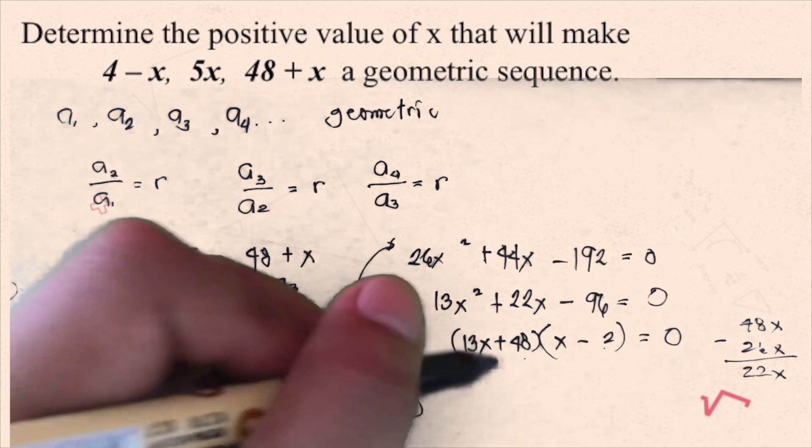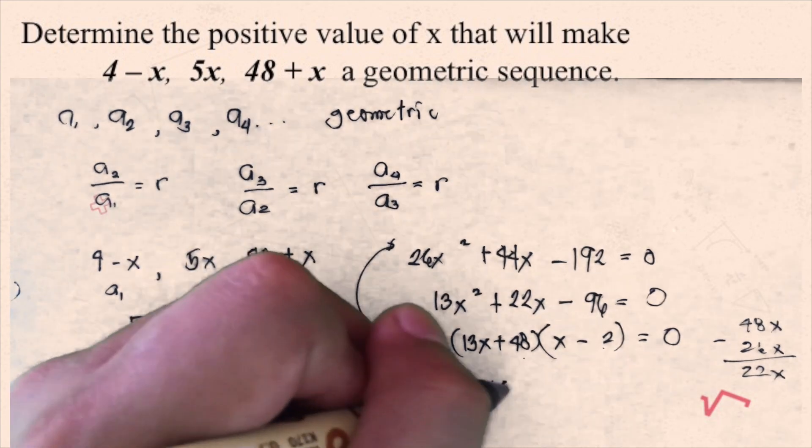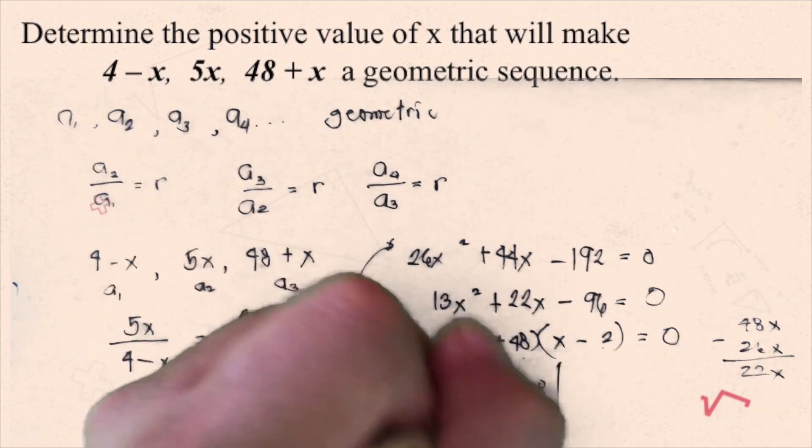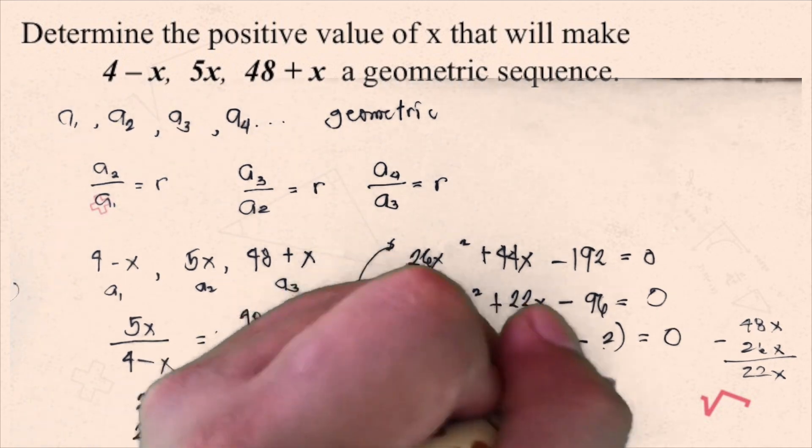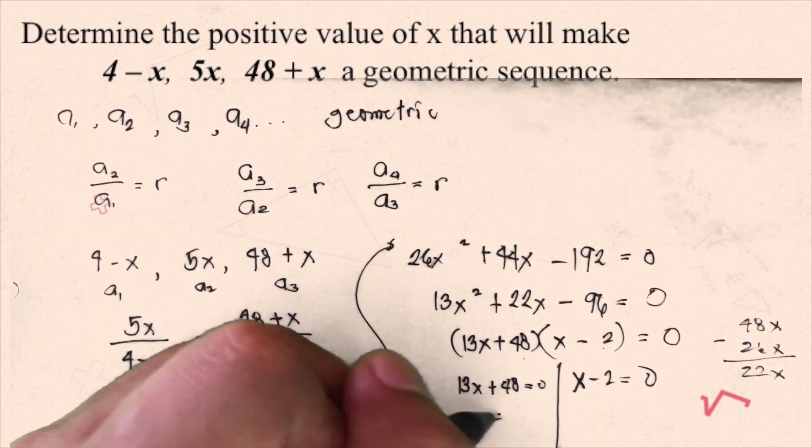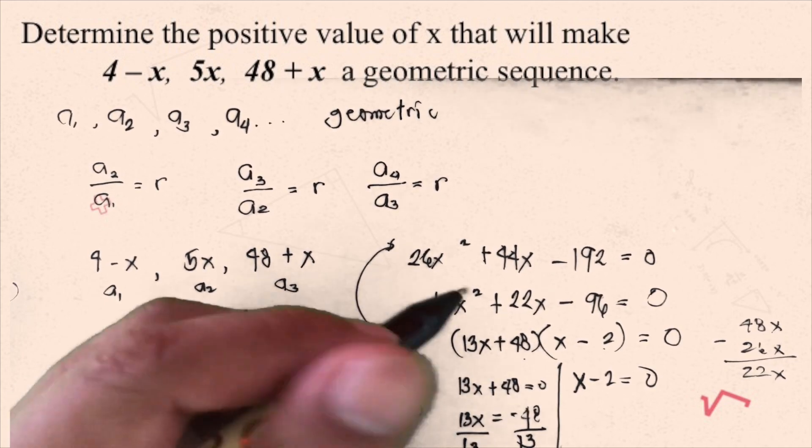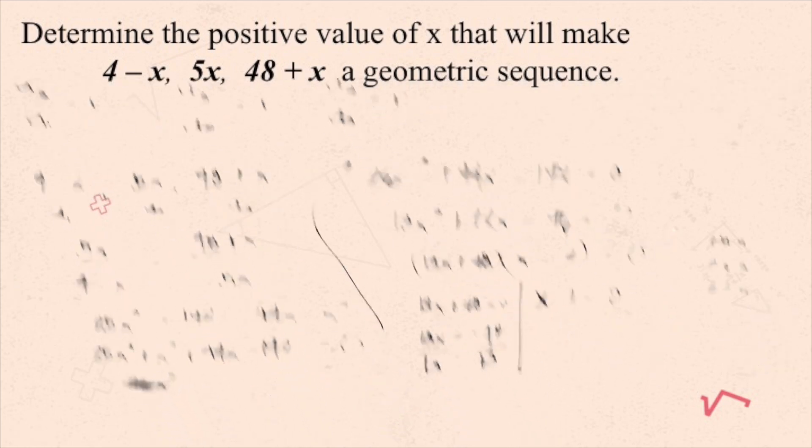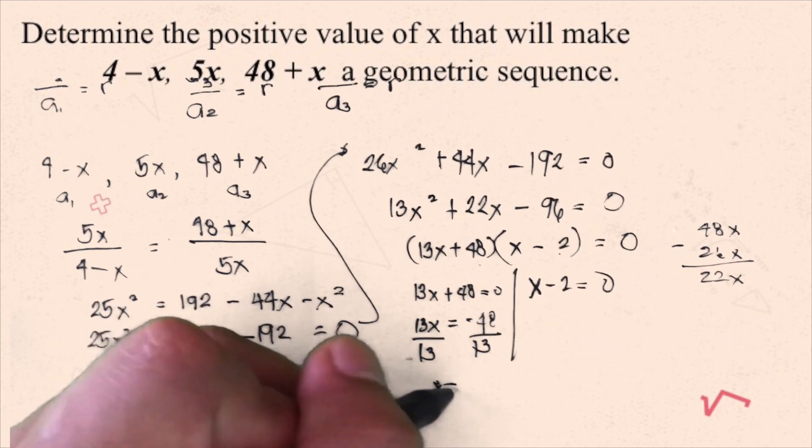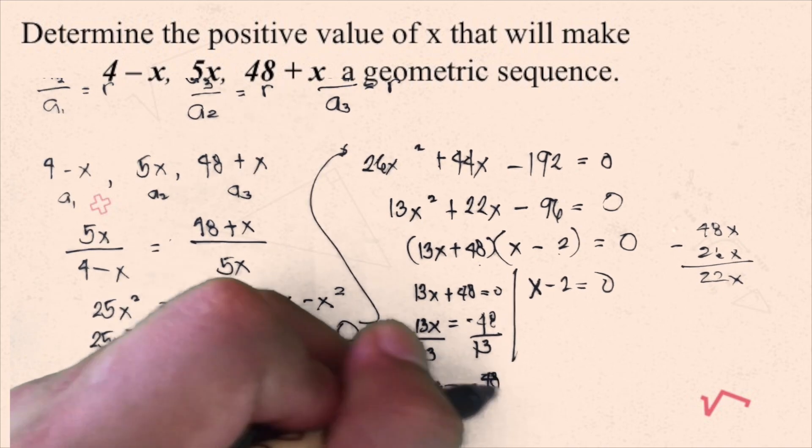So now that we have two factors, using zero product property, let's separate this. We have 13x plus 48 equals 0, so 13x equals negative 48, divide both sides by 13.